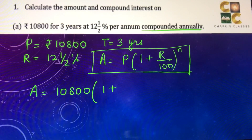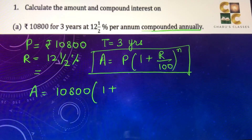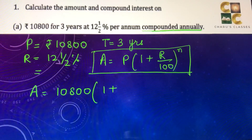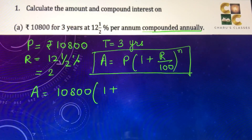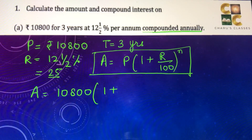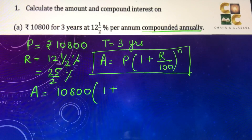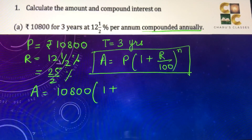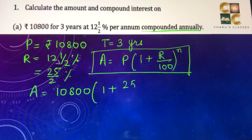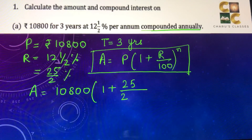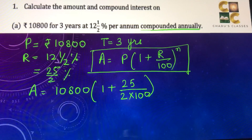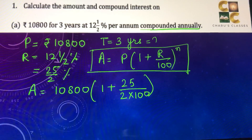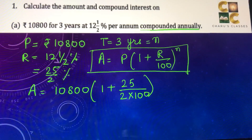Now, 12 and a half percent — 12 and a half is a mixed fraction, so 12 × 2 = 24, plus 1 = 25, so we can write it as 25/2 percent. In place of r we will write 25/2, and this 100 is there, to the power n, which is the time — 3 years — so to the power 3.